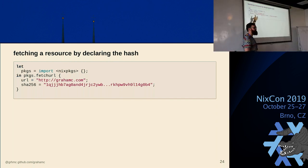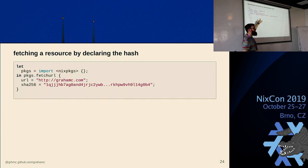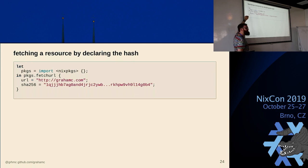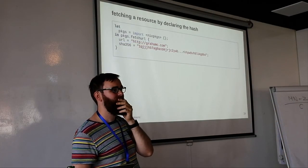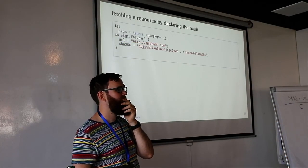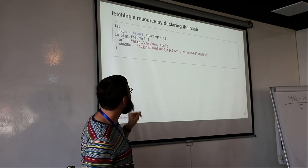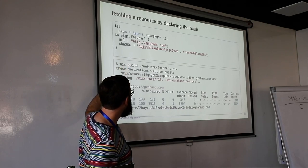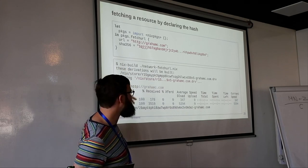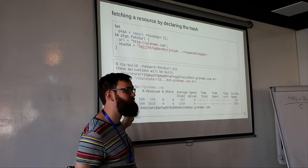The fetchURL function accepts a SHA-256 attribute value, and the contents of this string is the hash of what I'm going to fetch from grahamc.com. This is how you tell Nix what you're going to produce from the network. I build that, it successfully tries to build something from my website, and produces a result.